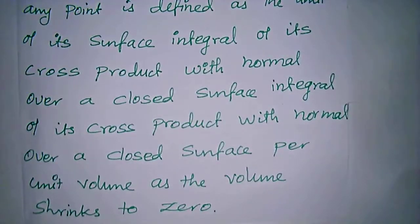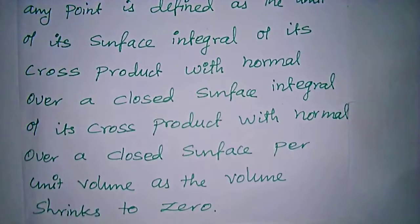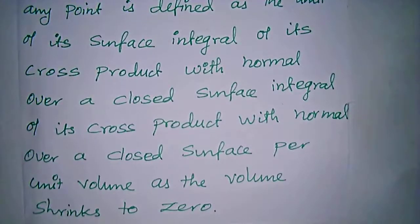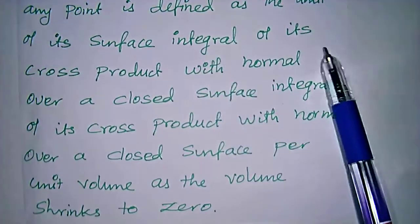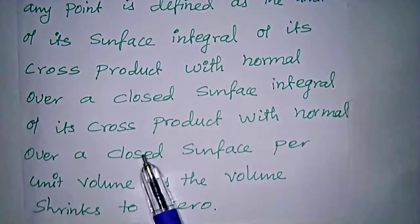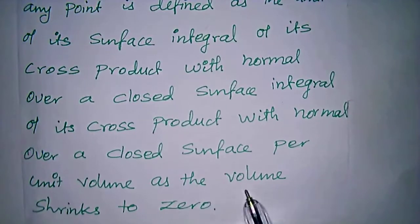The limit of the surface integral is a closed double integral of the cross product with the normal. Here, n-cap is the unit normal vector, so we have n cross A over a closed surface integral per unit volume — that is, 1 by V — as the volume tends to zero.